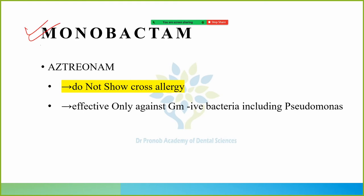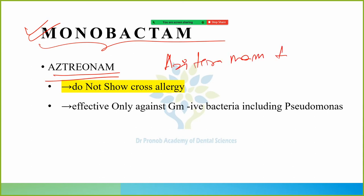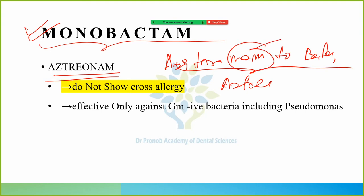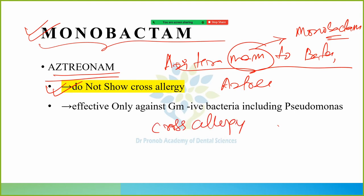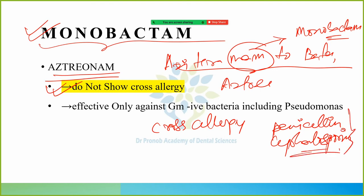Next group is Monobactam. In Monobactam, what comes? Aztreonam. How to remember? Think 'aji tera naam to bata' — the 'naam' helps remember it in Monobactam. Aztreonam does not show cross allergy. Cross allergy means: a patient allergic to penicillin will also be allergic to cephalosporin. But aztreonam does not show cross allergy — so patients allergic to penicillin and cephalosporin can be given aztreonam.